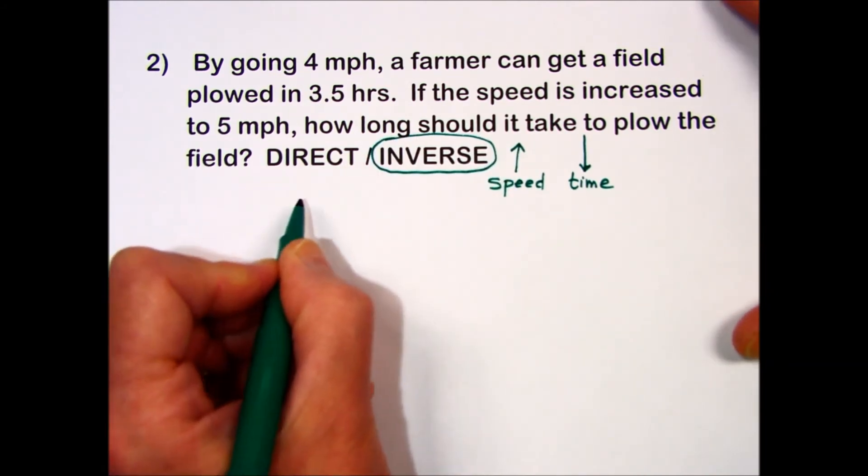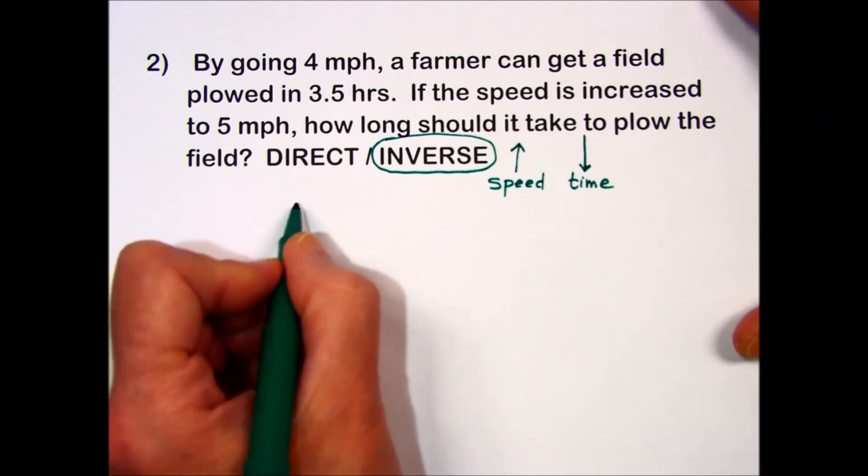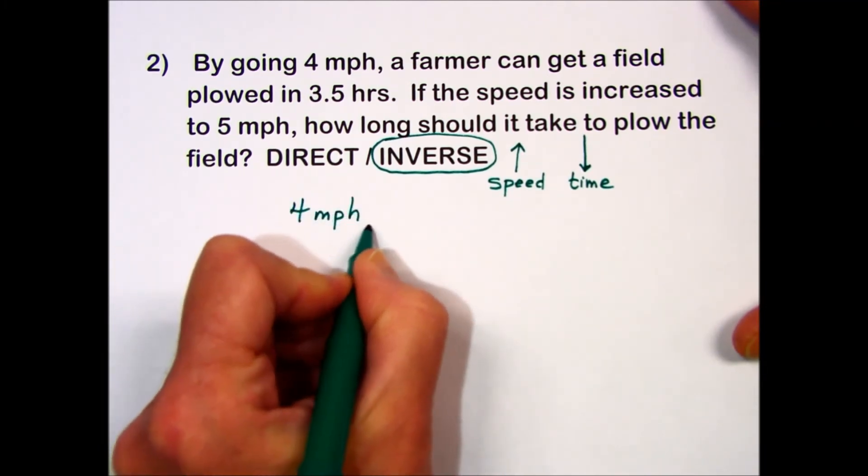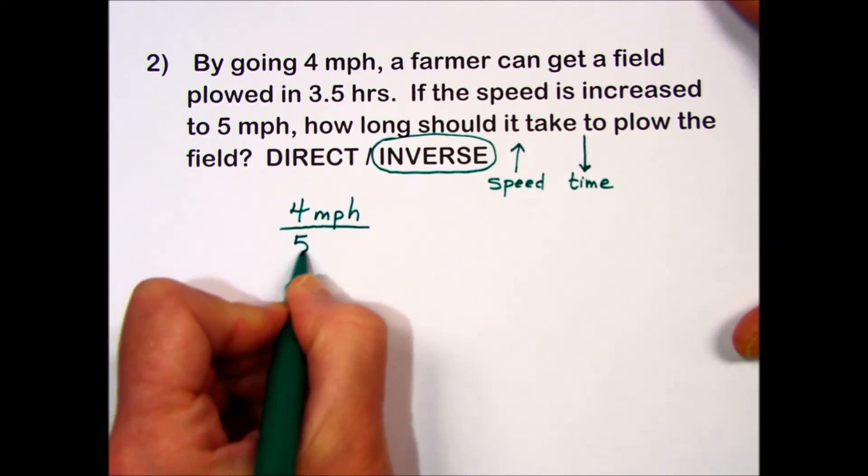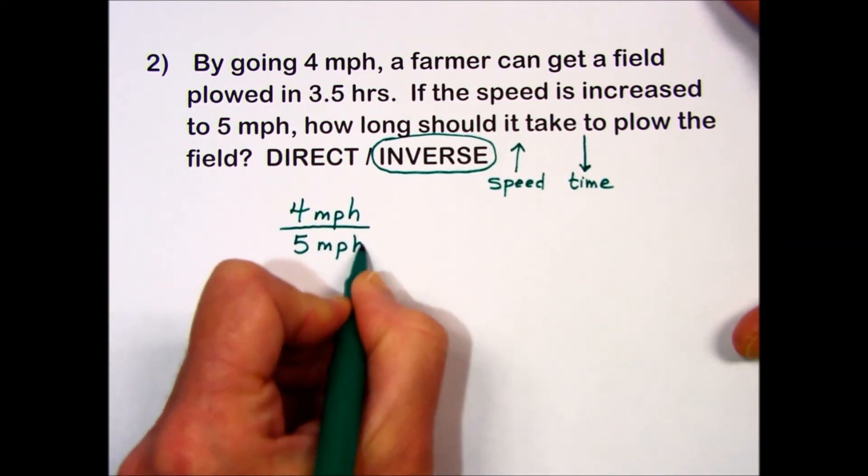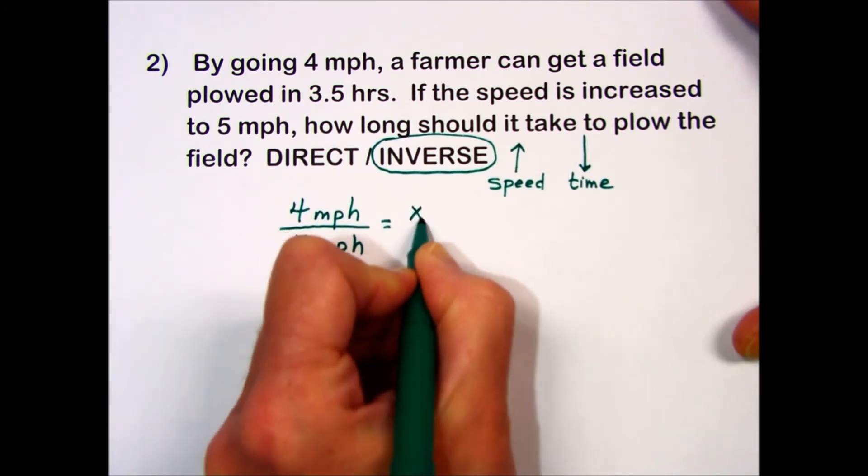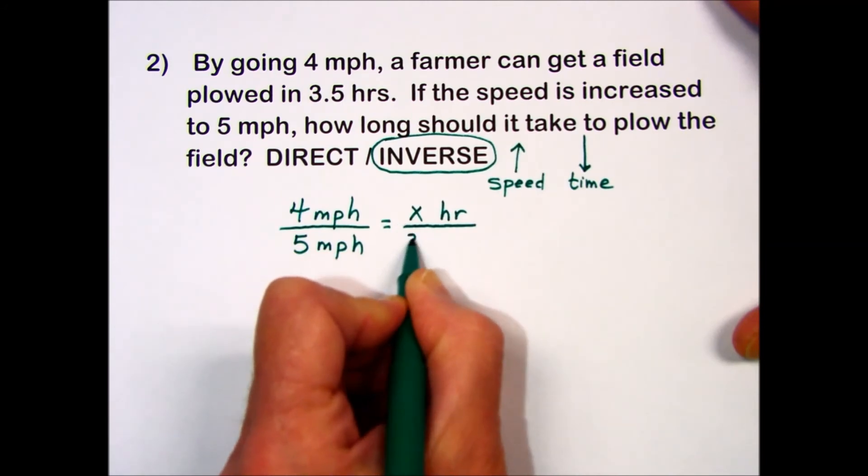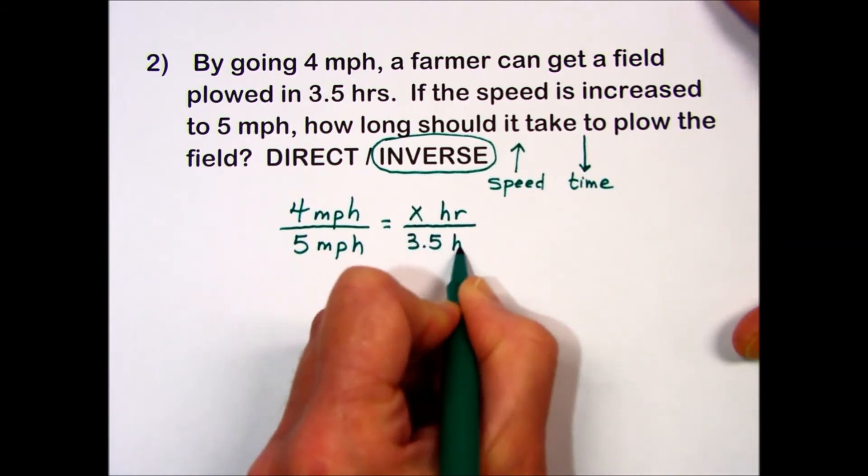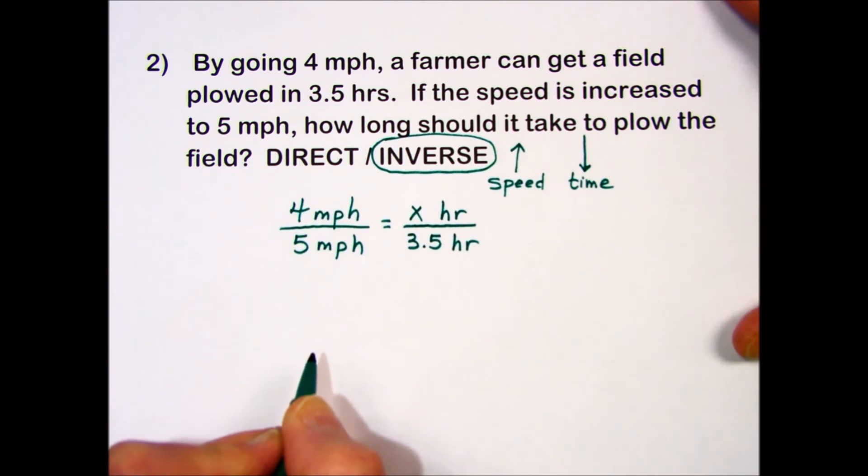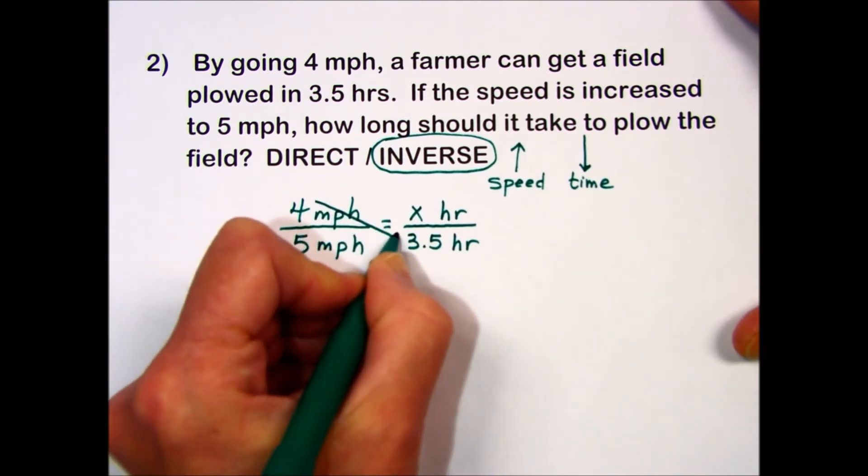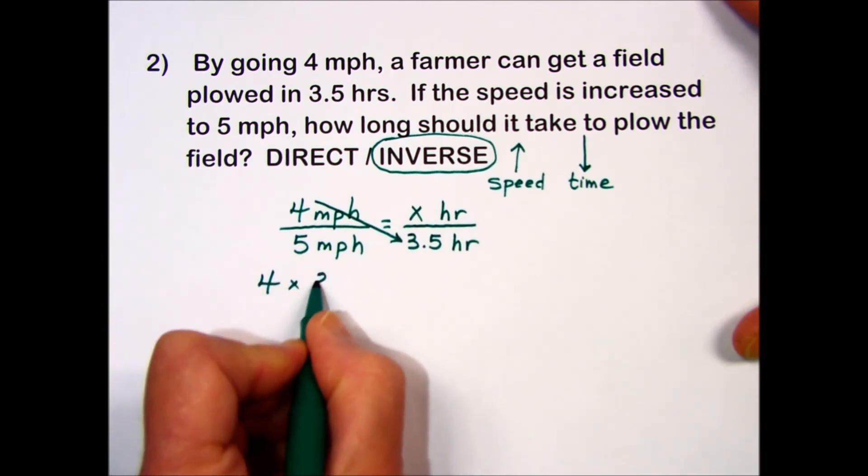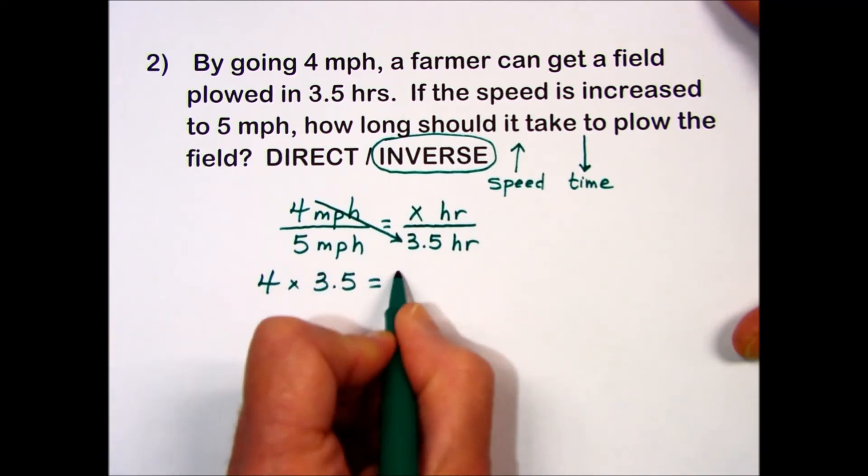To solve this inverse relationship, we're going to compare the original speed to the new speed, which is 5 miles per hour, compared to the new time, which is unknown to plow the field, compared to the original time, 3.5 hours at that 4 miles per hour speed. Multiplying the diagonal using cross multiplication with the numbers in it, we have 4 times 3.5, which gives us 14.